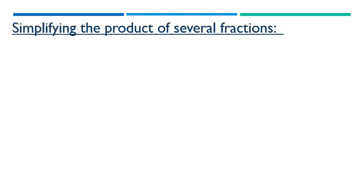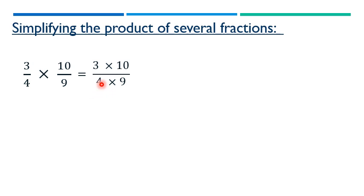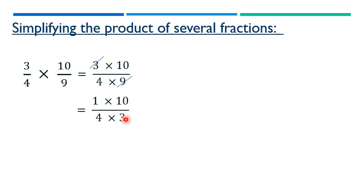The second simplification method: take 3 over 4 times 10 over 9. Write it as 3 times 10 over 4 times 9. We identify numbers with common factors: 3 and 9 share a GCF of 3, so 3 divided by 3 is 1 and 9 divided by 3 is 3. Then 10 and 4 share a GCF of 2, so 10 divided by 2 is 5 and 4 divided by 2 is 2.